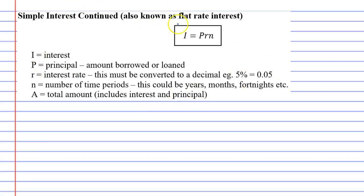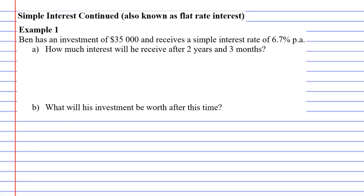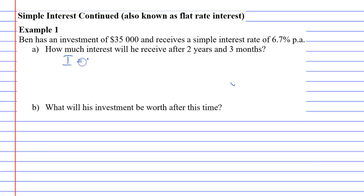We've got our formula and our terminology here if you want to read through it, but we're just going to get right into the example. Ben has an investment of $35,000 — that basically means he's put 35 grand in the bank. On this investment, he receives a simple interest rate of 6.7% per annum. Question A wants to know how much interest will he receive after two years and three months. We want to calculate the interest using the formula I equals PRN.